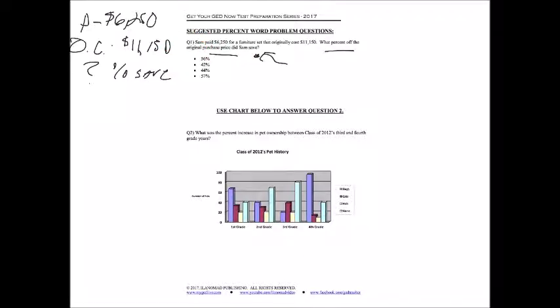And so that step is subtracting what he paid from the original cost, because that will give us the dollar amount, at least, that he saved. So $11,150 minus $6,250 is going to give us $4,900.